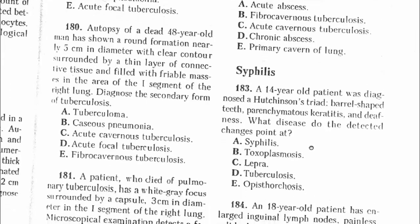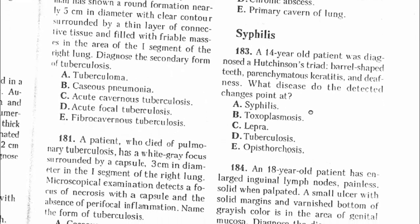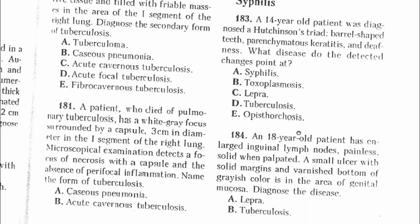Question 183: A 14-year-old patient was diagnosed with Hutchinson's triad. Anything you have with Hutchinson's triad — the answer is syphilis. The answer is A.